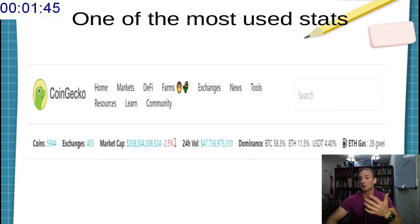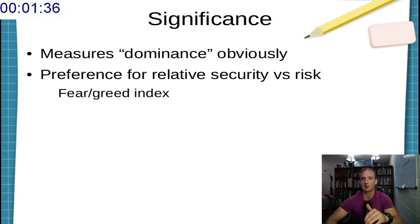Bitcoin dominance is one of the most used statistics that you will find in the cryptocurrency world. It's listed right on CoinGecko's main page right there beside the ETH gas price. So very important.